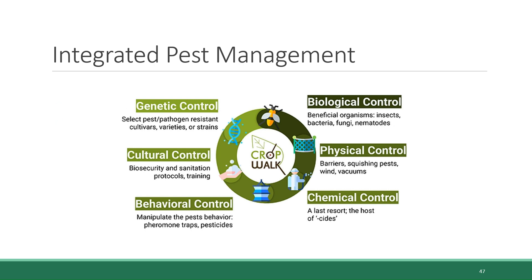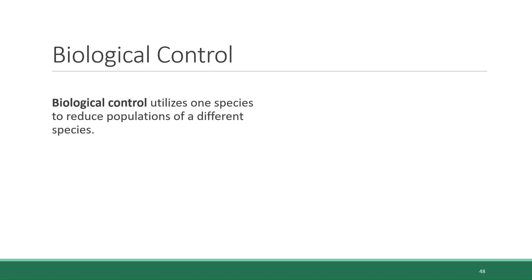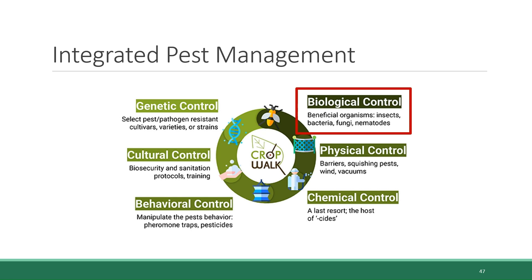Integrated pest management means using all tools available in your arsenal to prevent the need for chemical pesticides. Some of which might be forms of genetic control, like selecting varieties of crops that have some level of natural pest resistance. It could also include behavioral control, using things like pheromone traps that attract pests using artificial insect pheromones. Biological control would include ensuring that you have a healthy soil and crop ecosystem full of beneficial organisms that can serve as predators to pests. And if you do need to use chemical pesticides, treat them as a last resort and be very careful about which ones you choose and how you apply them to minimize ecological and health consequences.